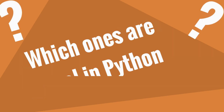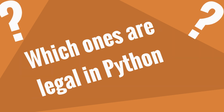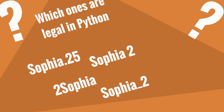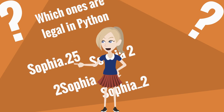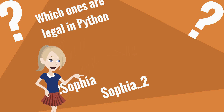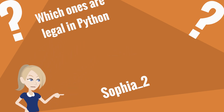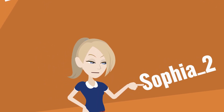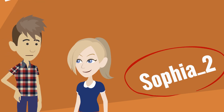I'll give you a few variable names, and you tell me which ones are legal in Python. Well, a dot is a special character so that can't be right. I can't have spaces in the variable name. And a variable name cannot start with a number. I think out of all four, the only legal variable name is Sophia_2. That's right.